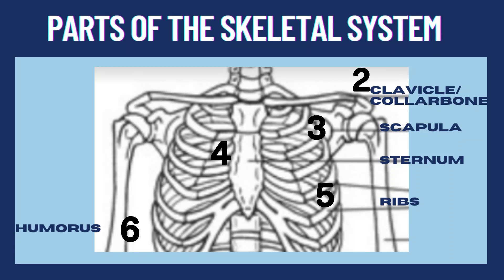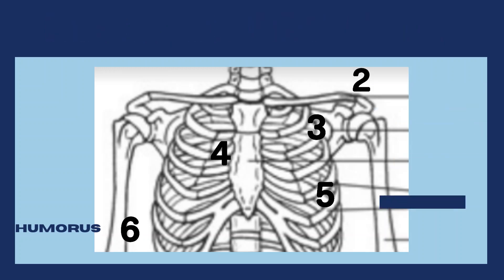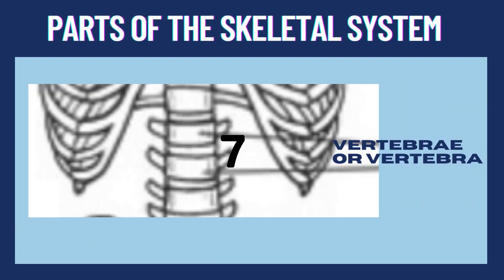We also have the clavicle or collarbone — you can touch your collarbone — the scapula, the sternum at the center of our ribs, and the ribs. Number 6 is the humerus, which is the bone of our upper arm. Number 7 is the vertebra. The singular form is vertebra, and when put together they form the vertebral column. You can touch your spinal cord and feel the different vertebrae at your back.